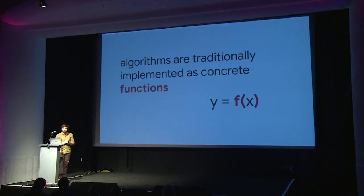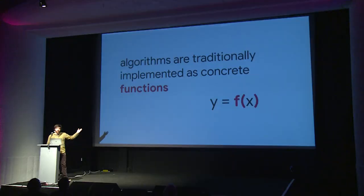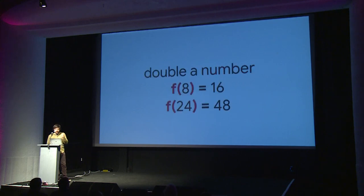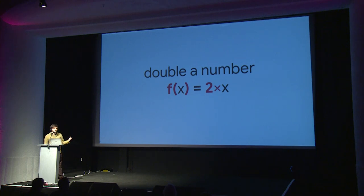So first, machine learning. Hopefully you're all familiar with the concept of algorithms — they're like a set of rules that you would follow to solve some problem, and they're traditionally implemented as a concrete function that does the same thing every time you give it a certain input. You've seen this in math class: y equals f of x, so x is the input, we give that to the function, and it returns some value y. If you wanted to write a function to double a number — put in an 8, get a 16 — it's simply 2 times x.